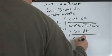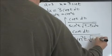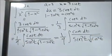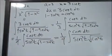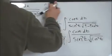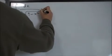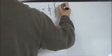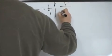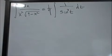Taking the square root of 1 - sin²t gives cos(t), and the two cosine factors cancel, leaving (1/9)·∫ 1/sin²t dt.